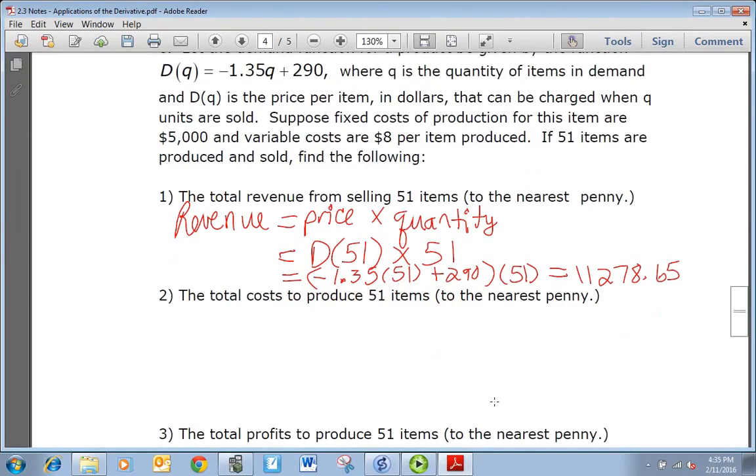We want to find the total cost to produce 51 items. So they tell us that the fixed costs for each item are $5,000, and the variable costs are $8 per item. So it's going to be 8 times 51 plus 5,000, and that's going to be $5,408.